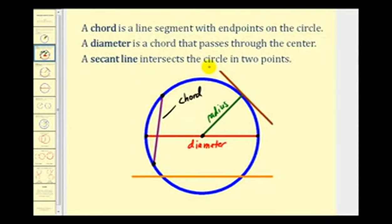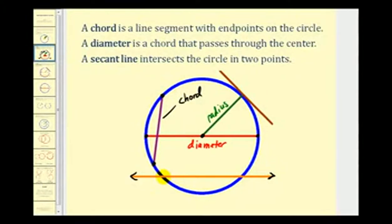A secant line intersects the circle in two points. If we take a look at this orange line here, assuming that it's a line extending in both directions forever, it intersects the circle in two points.